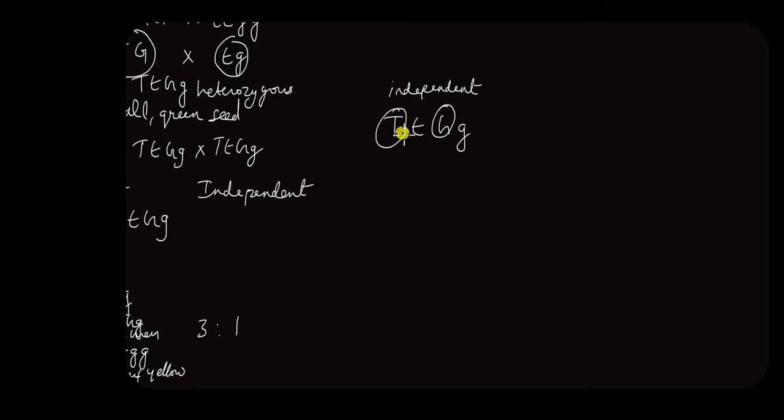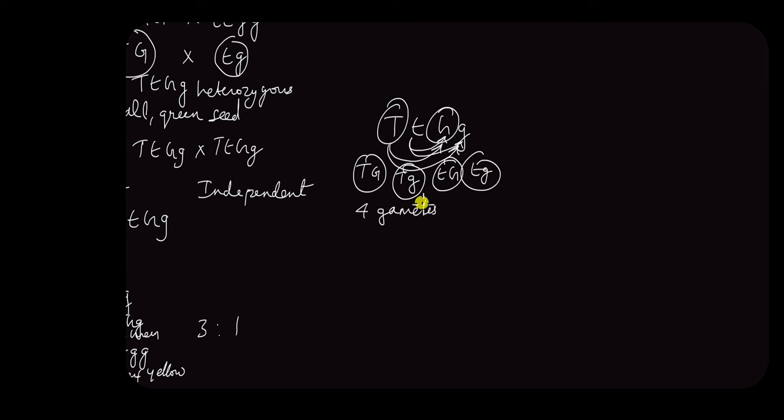Inheriting one of these traits has no effect on inheriting the other trait. So this capital T can combine with this capital G to form one gamete, it can combine with this small g to form another gamete. The small t similarly can combine with capital G to form one gamete and small g to form another gamete. So according to this hypothesis, four different parental gametes are possible, and each of these gametes have a 1 in 4 chance or a 25% chance of being inherited by the offspring.